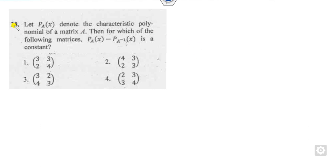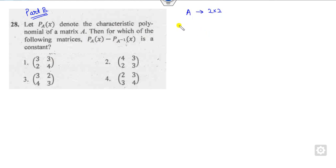Let us start with question number 28, which is related to Part B, so it has only one correct answer. If P(A) represents the characteristic polynomial of matrix A, then which of the following is constant? A is a 2×2 matrix. The characteristic polynomial is λ² minus trace(A)·λ plus determinant(A).